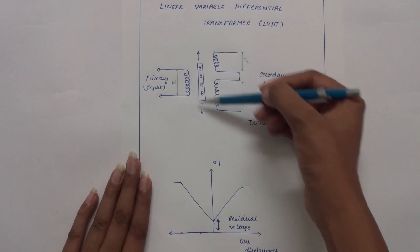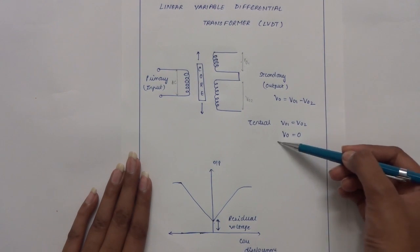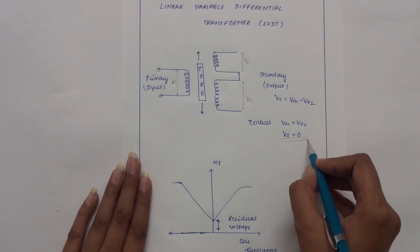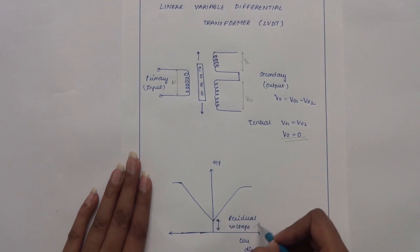If the core is placed ideally in the central position, V01 will be equal to V02 and hence the output voltage is zero. But in practice, there is a residual voltage that exists with the core in this position.